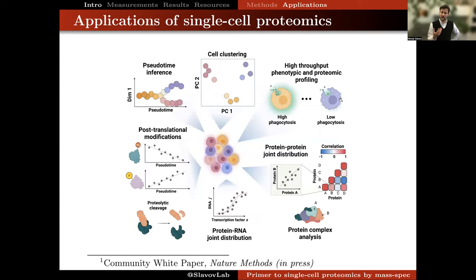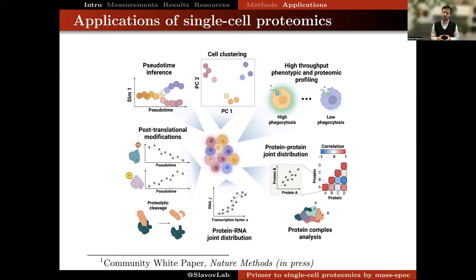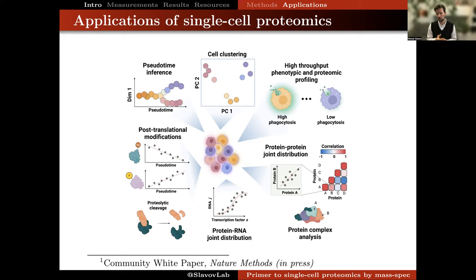Another major advantage of mass spectrometry analysis is the possibility to measure more than protein abundance. In particular, we might be able to measure various protein modifications. We can take advantage of having measured many proteins to quantify covariation and from that infer regulatory relationships or analyze joint distributions. We can analyze protein localization, temporal dynamics, and so on.